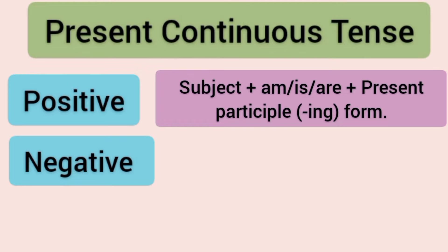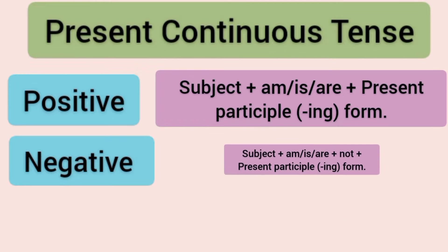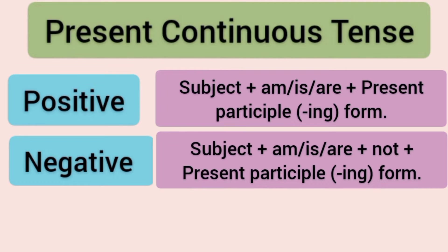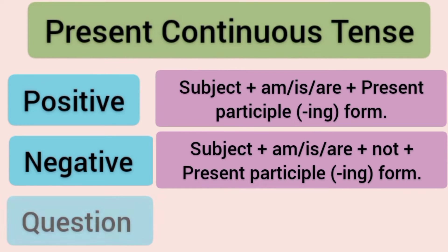Negative sentence me: subject plus am, is, are plus not plus present participle — means verb ka ing form.